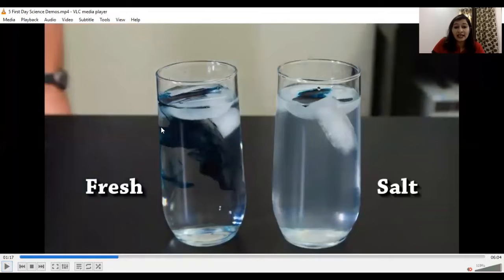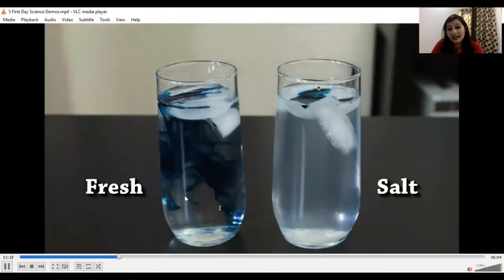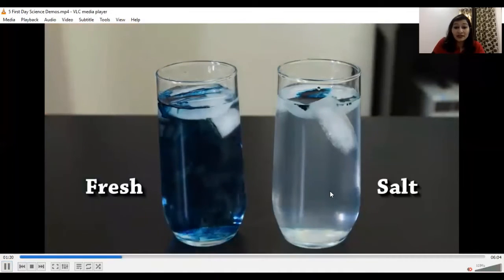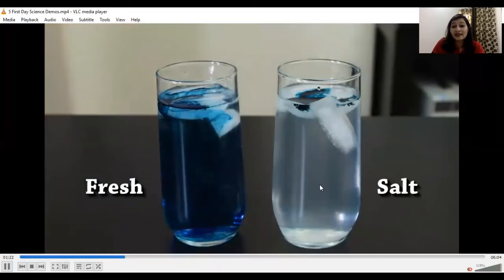Now here you can see the food color has moved down to the bottom of the fresh water, whereas it is stuck over here on the ice. The reason behind it is density. Because of the density, the salt water has higher density, so ice will take more time to melt as compared to fresh water.